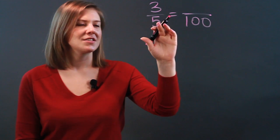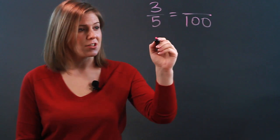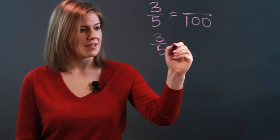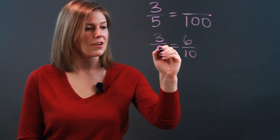So here, there's a step I think that would be easy to make. I'm going to drop down and say 3 fifths is equal to 6 tenths. How do I know that?